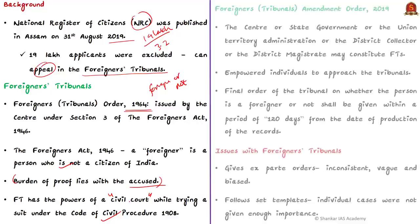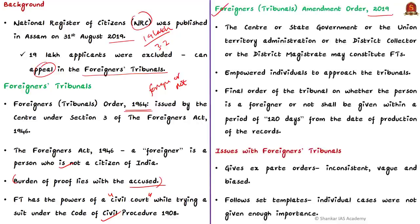There was a recent amendment last year. After the amendment, the power to constitute tribunals was given to state governments, UTs, and even district collectors. Previously, only the centre could establish tribunals. Now district collectors or district magistrates can set up foreigners tribunals. The amendment also empowers individuals to approach the tribunals, whereas earlier only state administration could. The final order on whether a person is a foreigner shall be given within 120 days from the date of production of records.